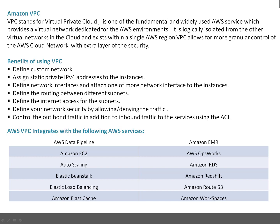As you can see on screen, there are many Amazon services integrated with VPC — basically services which require network connectivity. These include Data Pipeline, EC2 Auto Scaling, Elastic Beanstalk, Elastic Load Balancing, ElastiCache, EMR, OpsWorks, RDS, Redshift, Route 53, and WorkSpaces.